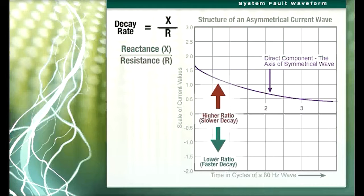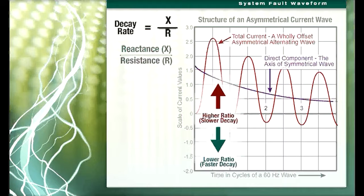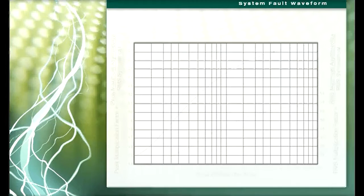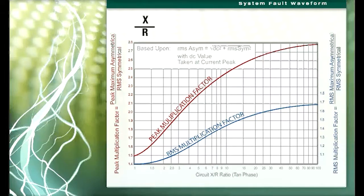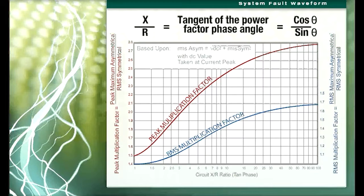The effect of this decay is that the fault current changes from an asymmetrical current to a symmetrical current with respect to the zero voltage axis within a few cycles of time. This graph shows the multiplying factors to determine RMS and peak currents for various X over R ratios. The X over R ratio is the tangent of the power factor phase angle.